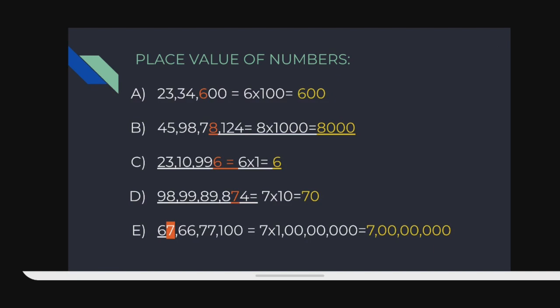A few more examples on how to write the place value of numbers. In the first example (A), 6 is in the hundreds place. 6 into 100 = 600. So 600 is the place value of 6. In example B, 8 is in the thousands place. 8 into 1000 = 8000. In example C, 6 is in the ones place. 6 into 1 = 6. In example D, 7 is in the tens place. 7 into 10 = 70. So 70 is the place value of 7.